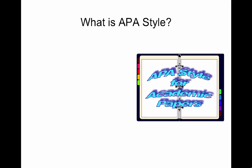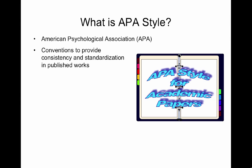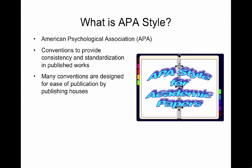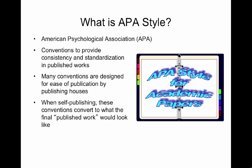What is APA Style? APA is the American Psychological Association. These are conventions to provide consistency and standardization in published works. Many conventions are designed for ease of publication by publishing houses. When self-publishing, these conventions convert to what the final published work would look like.